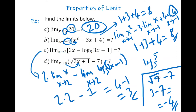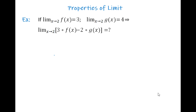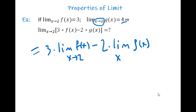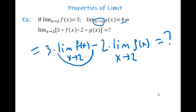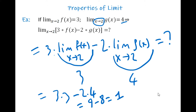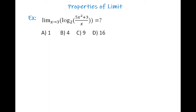For the next question: if the limit of f(x) as x→2 is 3, and the limit of g(x) as x→2 is 4, find the limit of 3f(x) − 2g(x) as x→2. We rewrite this as 3 times limit of f(x) minus 2 times limit of g(x), giving us 3×3 − 2×4 = 9 − 8 = 1.